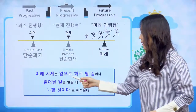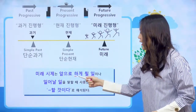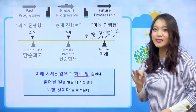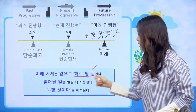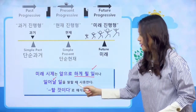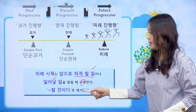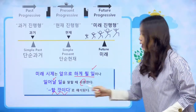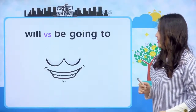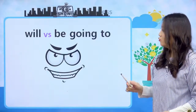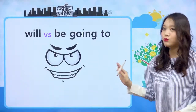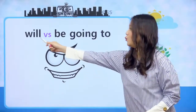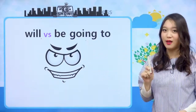미래 시제는 뭐예요? 앞으로 하게 될 일, 지금까지 한 일이 아니라 아직 하지 않은, 하게 될 일이나 일어날 일을 말할 때 사용합니다. 해석은 '뭐뭐 할 것이다'라고 해석이 돼요. 우리 미래를 말할 때 빼놓을 수 없는 것이 있어요. 뭐냐면 will과 be going to입니다.